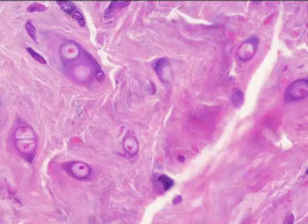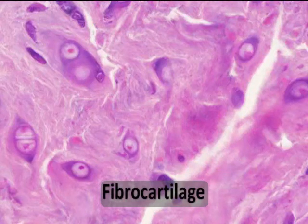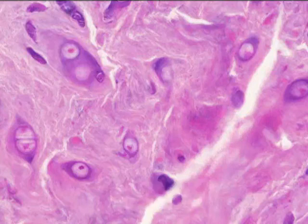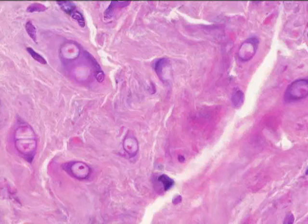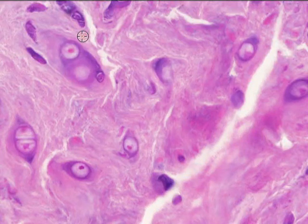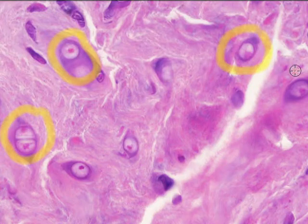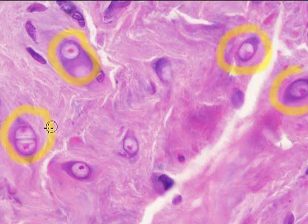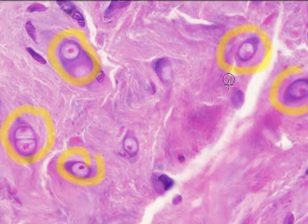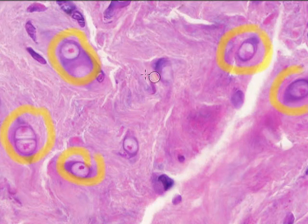This cartilage is fibrocartilage, and this is one of the extremes — if hyaline is the middle-of-the-road average cartilage, this is one extreme. What we see here is a very widely dispersed set of chondrocytes where the cartilage cells have a lot of space between them and a lot of matrix between them. They're in their lacunae — you can see some of the white regions there — but look at the matrix: it's very dense, and it almost looks like denser regular connective tissue.